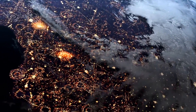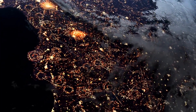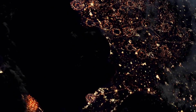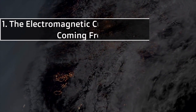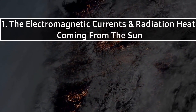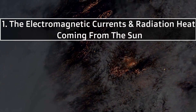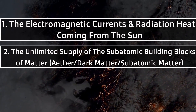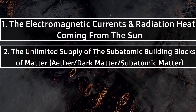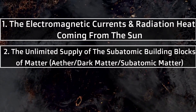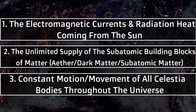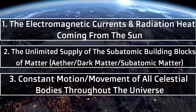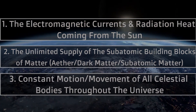Earth, and possibly other planets, is like an organism in constant growth, always increasing in size due to three factors: 1) The electric or electromagnetic currents, radiation, heat and energy; 2) The unlimited supply of the subatomic building blocks of matter — ether, dark matter, subatomic matter from outer space; and 3) Constant motion and movement of all celestial bodies throughout the universe. These three forces are the building blocks of life in the universe.